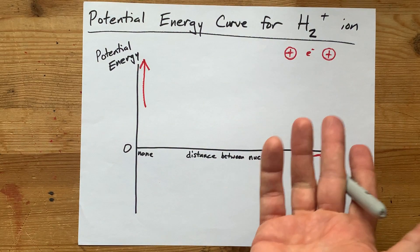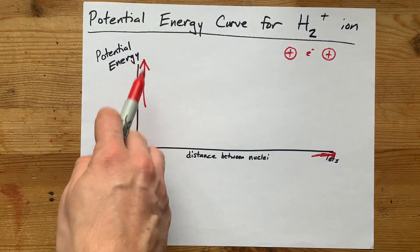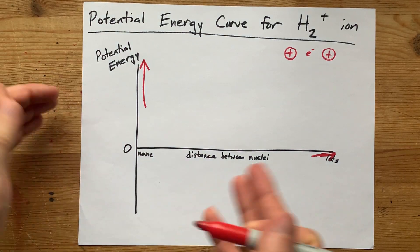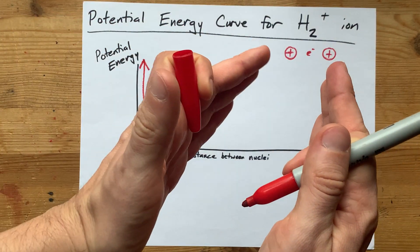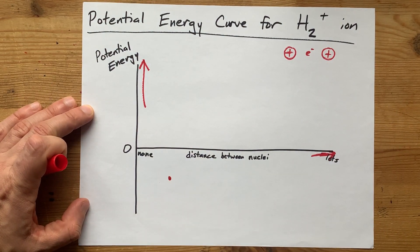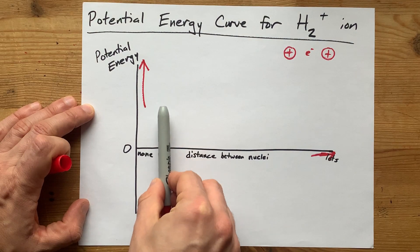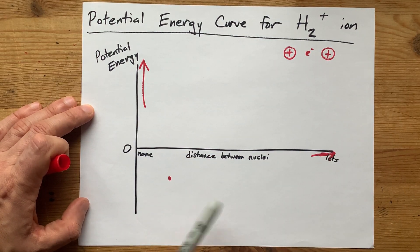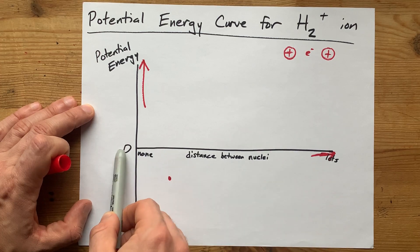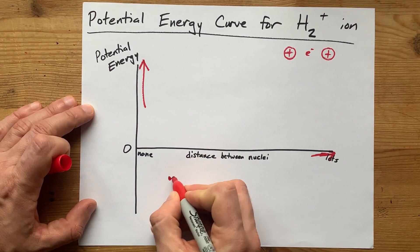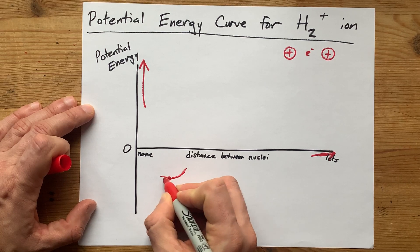and they're not repelling as much as they do in this scenario, when they're very close together, we're going to say that some of the potential energy has been released. So, I want a dot somewhere down here, closer to the y-axis than infinity, and below the zero line for potential energy. Then, from there, I want you to draw a little U-shape.